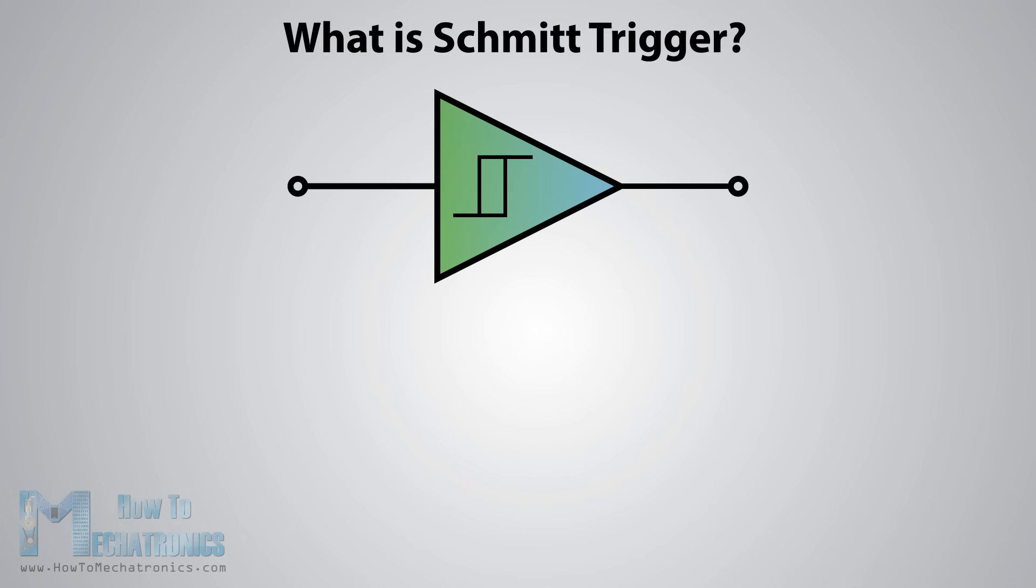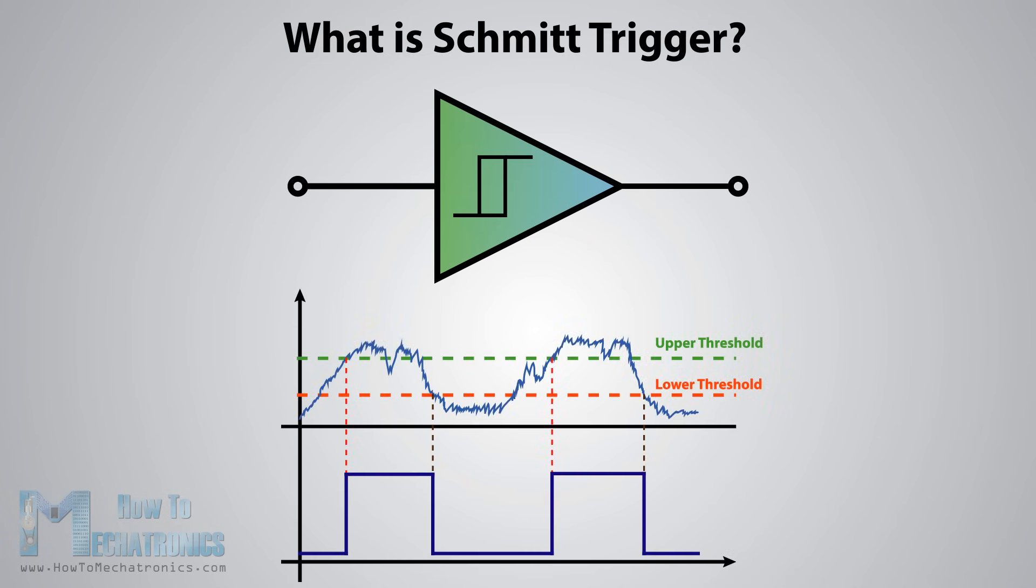The Schmitt trigger is a logic input type that provides hysteresis or two different threshold voltage levels for rising and falling edge. This is useful because it can avoid errors when we have noisy input signals from which we want to get square wave signals.